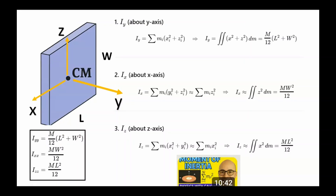To compute the moment of inertia, we sum each mass times its perpendicular distance from the axis, done with an integral for a continuous body. I explained this process in detail in my video 'Moment of Inertia: Where Physics Meets Calculus.' Here I'm showing the results of those integrals for a rectangular plate. The results are: Iyy = (m/12)(l² + w²), Ixx = mw²/12, and Izz = ml²/12.